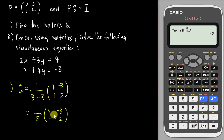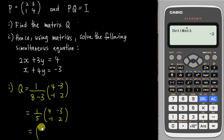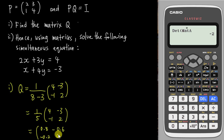So P inverse equals 1/5 × [4, −3; −1, 2]. You can leave it in this form, or multiply through for decimals: 4/5 = 0.8, negative 3/5 = negative 0.6, negative 1/5 = negative 0.2, and 2/5 = 0.4. To verify with the calculator, define this as matrix B with values 2 3 1 4. Go to Option, matrix calculation, choose B inverse. You can also confirm the determinant is 5 using the determinant function.